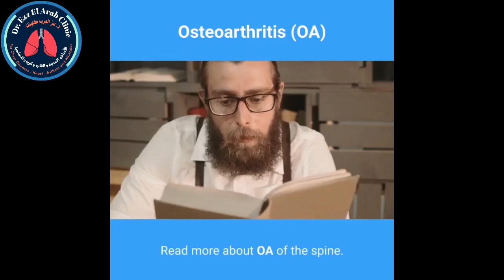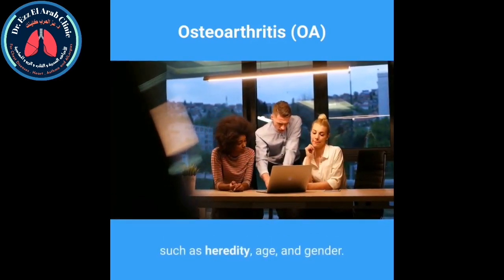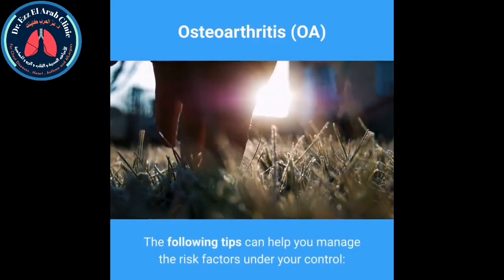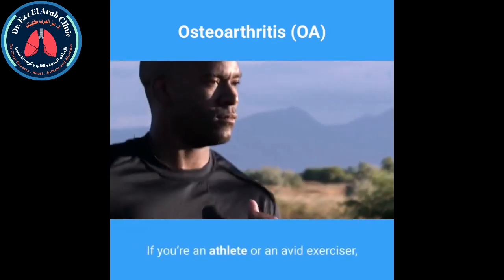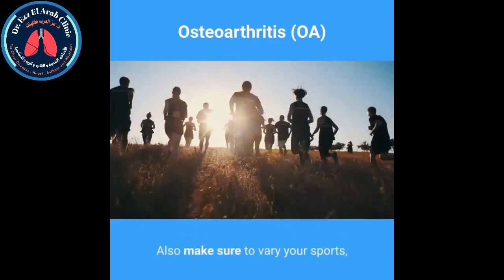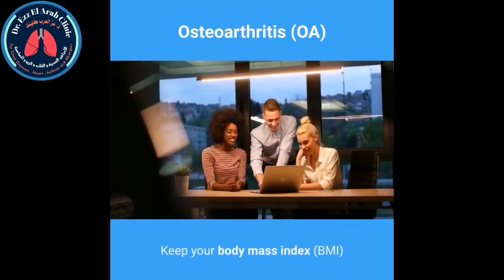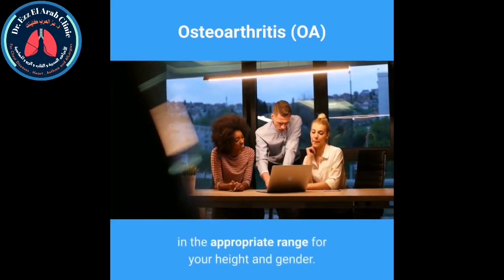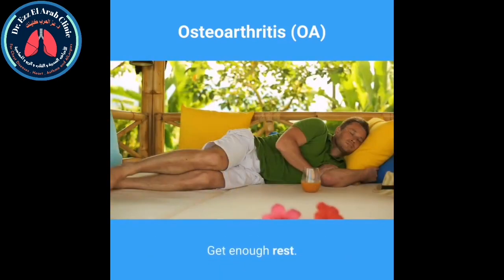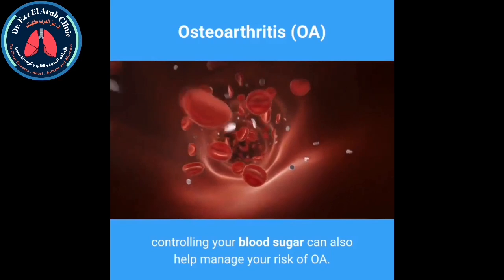Osteoarthritis prevention. You may have risk factors for OA that you cannot control, such as heredity, age, and gender — but other risk factors can be managed to help reduce your risk. Support your body: if you are an athlete or avid exerciser, wear athletic supports and shoes that reduce impact on your knees, and vary your sports so that all your muscles get a workout. Watch your weight by keeping your BMI in the appropriate range. Keep a healthy diet focused on fresh vegetables and fruits. Get enough rest and sleep. If you have diabetes, controlling your blood sugar can also help manage your risk of OA.